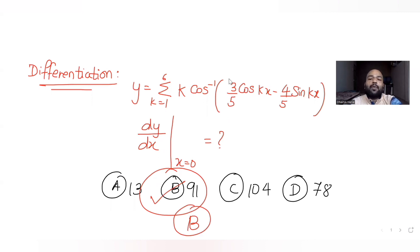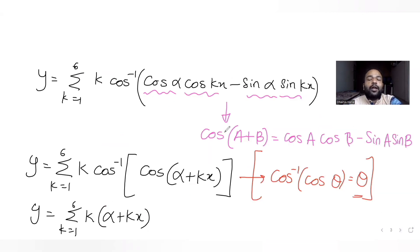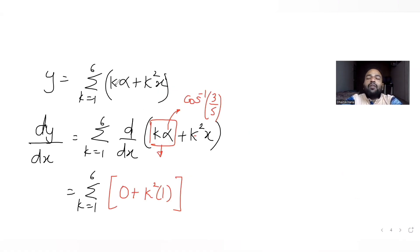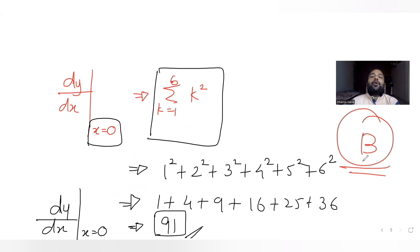To recap: we converted the expression inside cos inverse in terms of cos by setting cos α equal to 3/5 and sin α equal to 4/5, recognized the cos(a plus b) identity, used cos inverse of cos θ equals θ, expanded to get kα plus k²x, differentiated to get k², and summed k² from 1 to 6 to get 91.